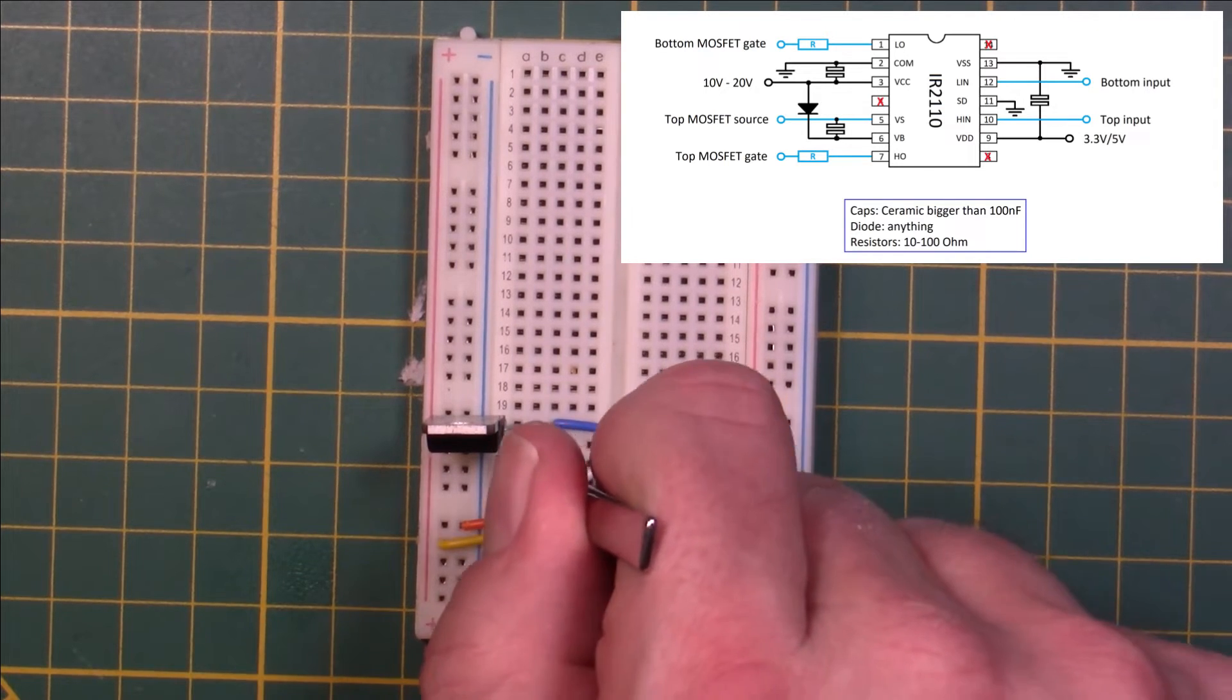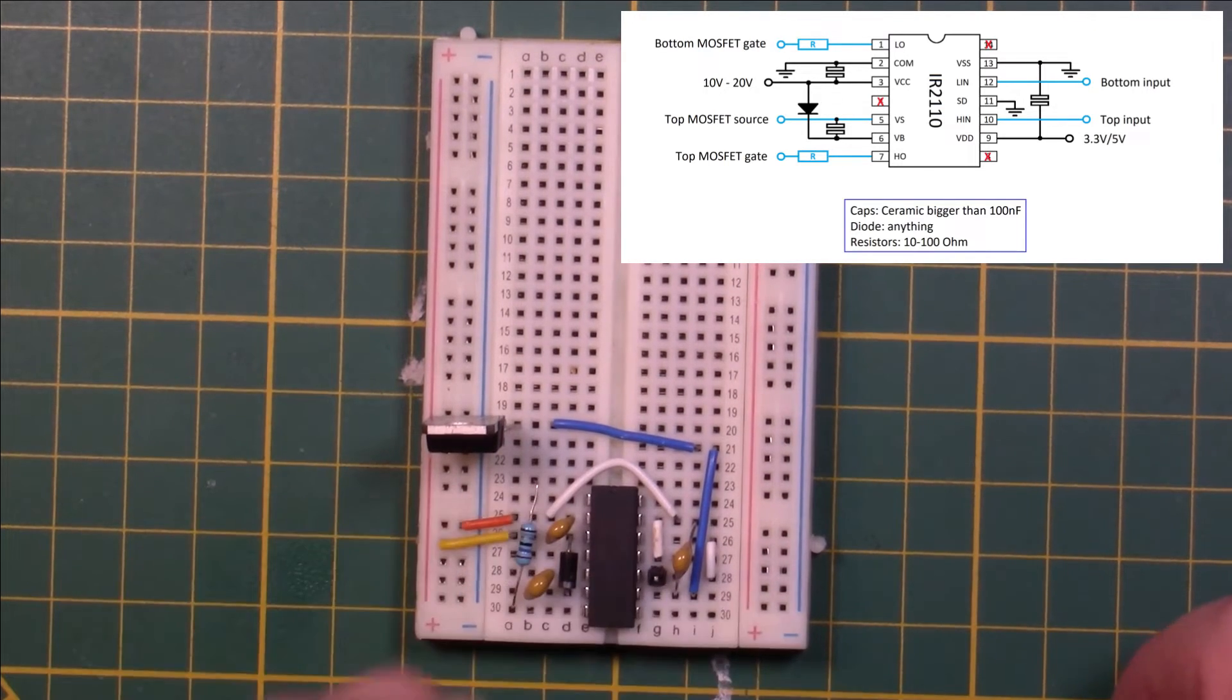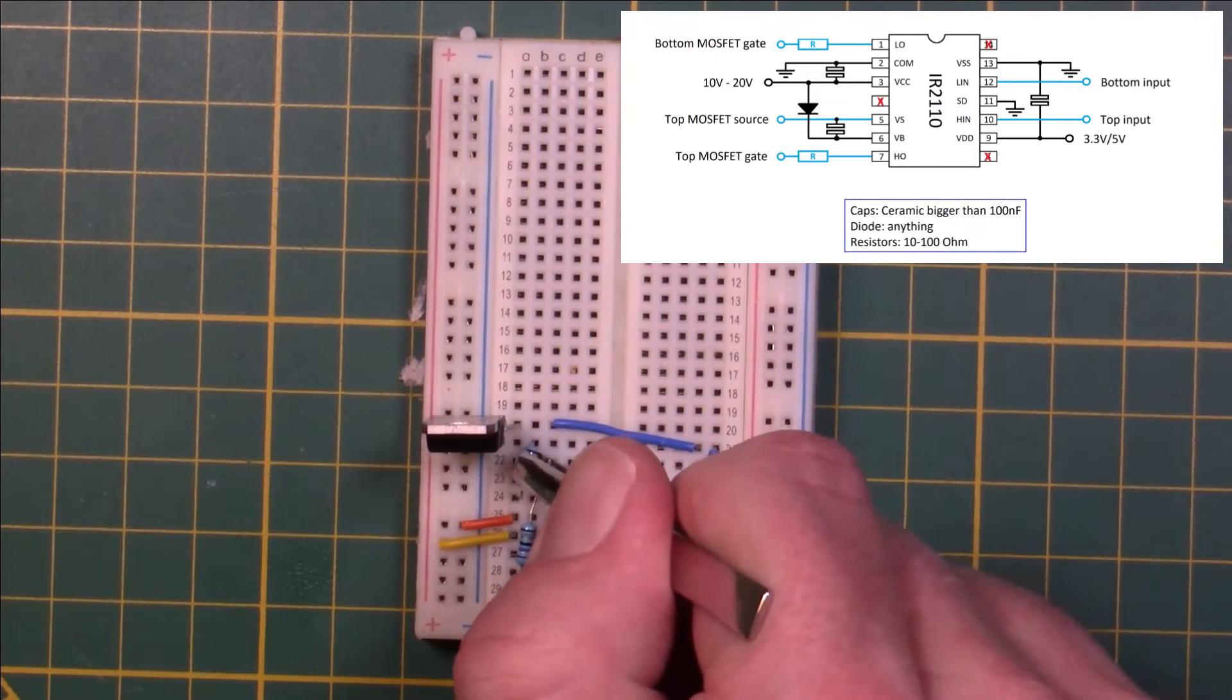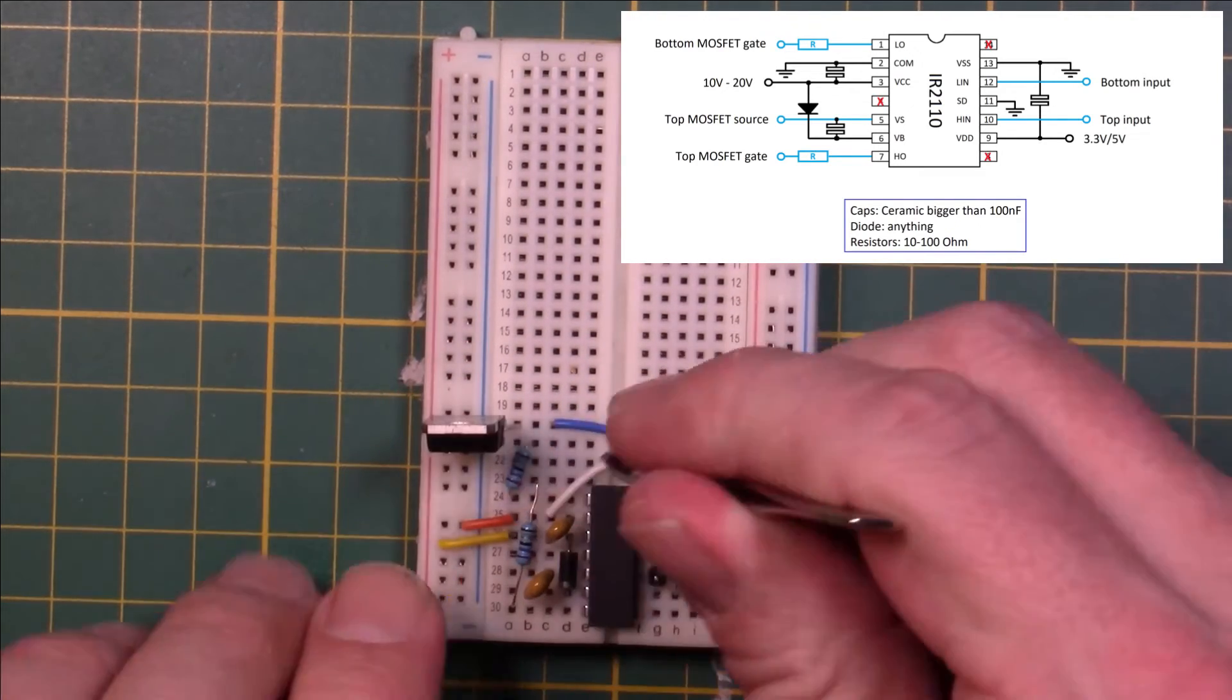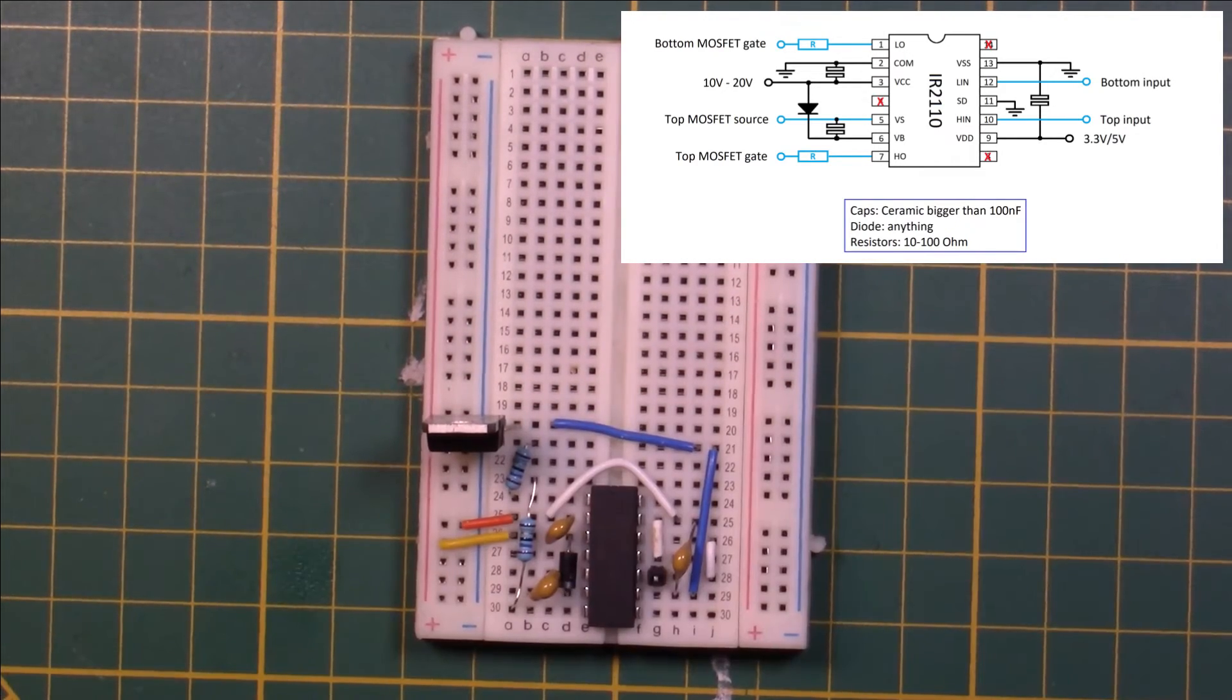The gate output signals on pin 7 and pin 1 first have to go through a resistor to prevent voltage spikes that can kill our components. I orient them in such a way that I end up above the IC.